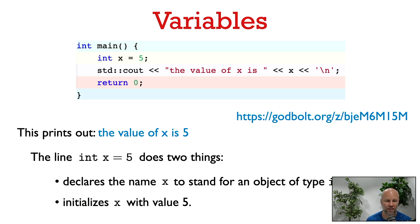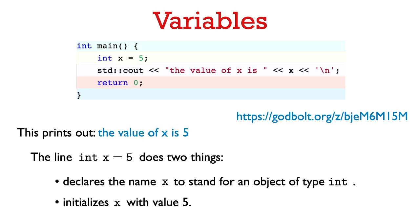In the first line, we say int x equals 5. So this line is basically doing two things. We are introducing the name x into our program, and we're saying that x is going to stand for an object of type int. And now we're also initializing x with the value 5. So now we're assigning x to the value 5 at the moment that it is created.